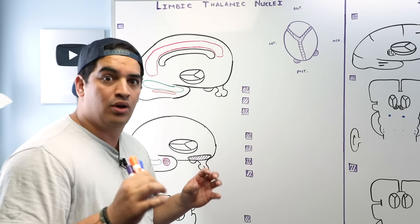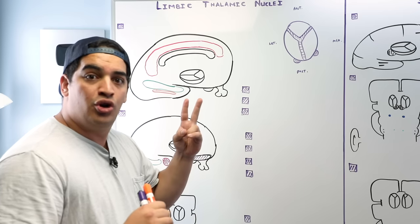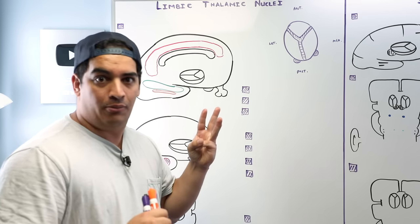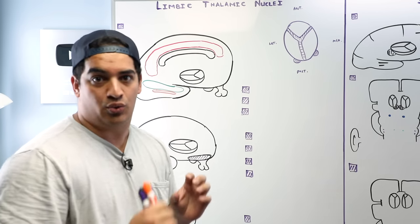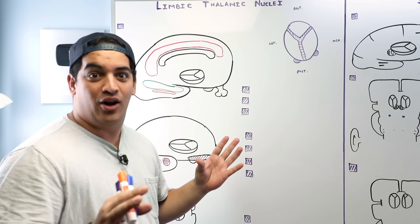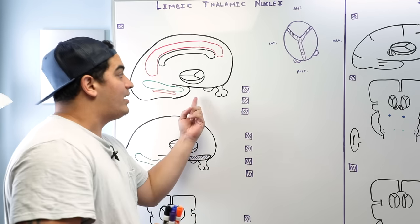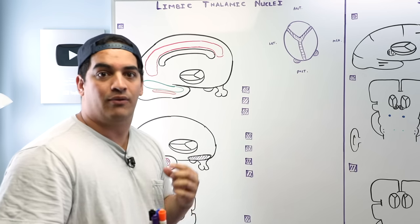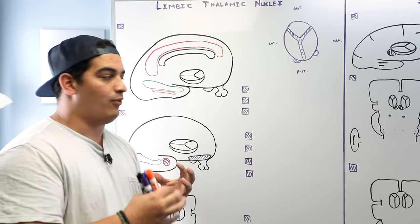The thalamus is a relay station for three types of information: one, limbic system information; two, sensory information; and three, motor information. It's taking that information and sending it to the cerebral cortex. That's the basic outline of this video. But now what we've got to do is really dig into the types of limbic information, types of sensory, and types of motor information that the Thalamus is acting as a relay station for.